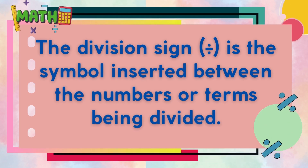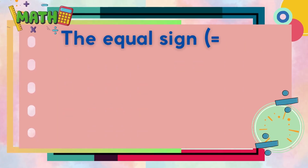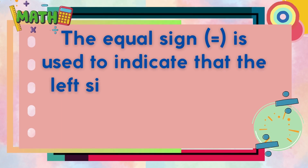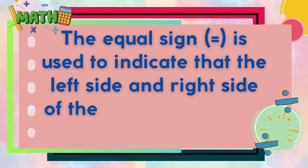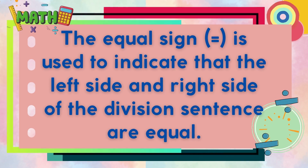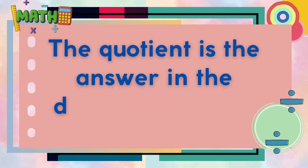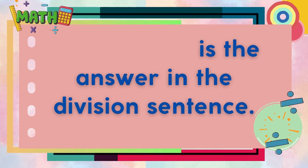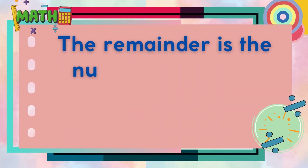The equal sign is used to indicate that the left side and the right side of the division sentence are equal. The quotient is the answer in the division sentence. The remainder is the number that is left over after the operation of division.